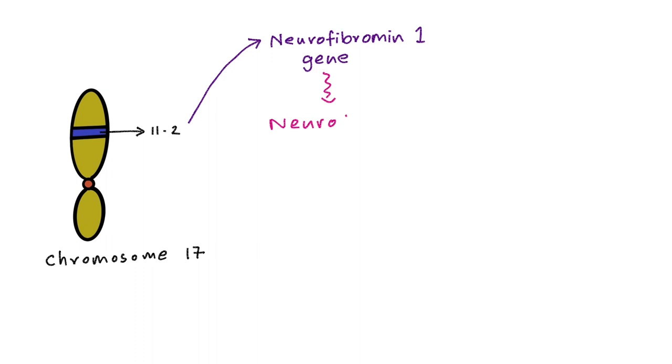Now we're going to learn how neurofibromatosis 1 develops. On the long arm of chromosome 17, there's a region called band 11.2. This band codes for the neurofibromin 1 gene, which produces a protein called neurofibromin. Inside cells, there are many messenger pathways. One such pathway is the RAS pathway. When the RAS pathway is active, it leads to cell proliferation. Neurofibromin inactivates this RAS pathway, which stops proliferation.